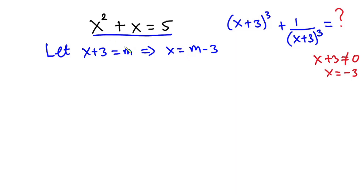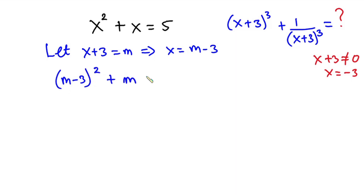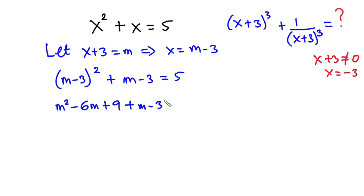Let's plug this value into the equation. We have (m−3)² plus (m−3) equal to 5. Expanding gives m² minus 6m plus 9, then plus m minus 3, equal to 5. Now let's equate everything to zero.